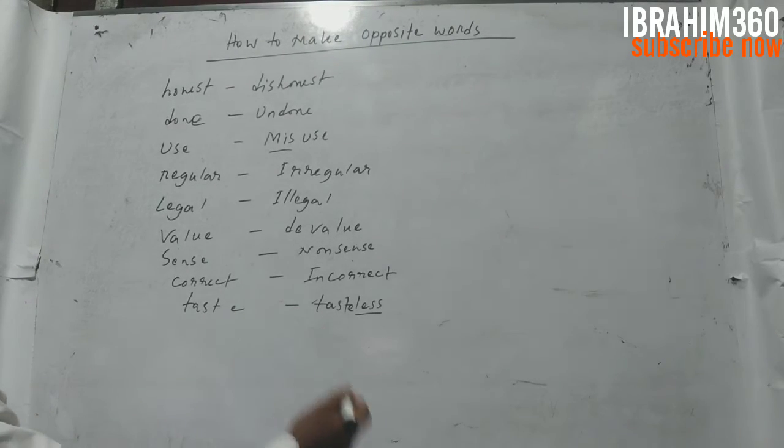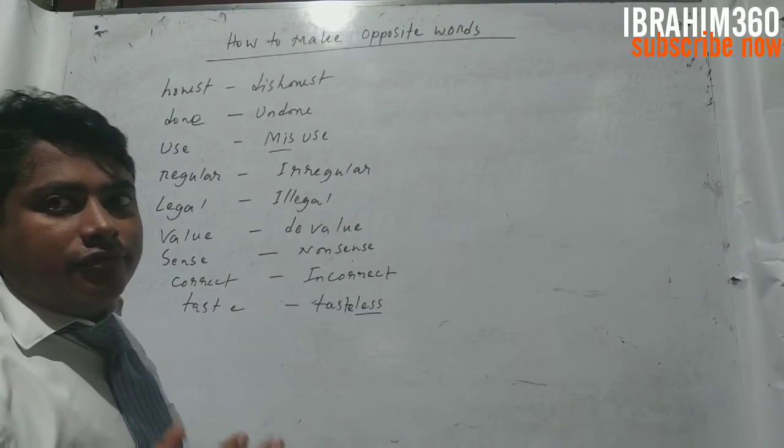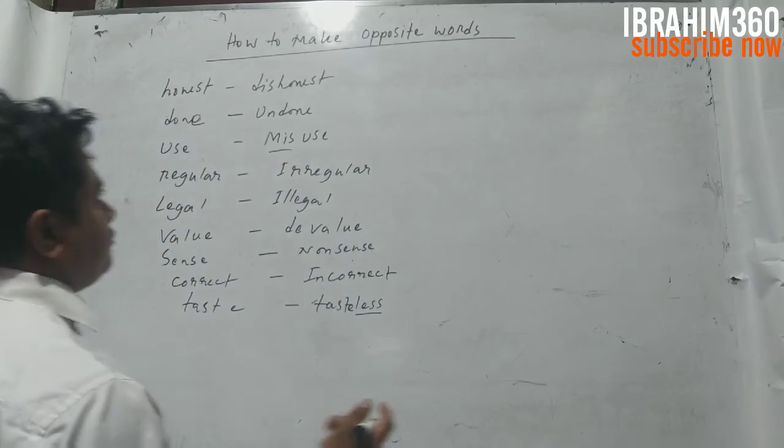Tahole amra easily English grammar-e synonym teke antonym korte paree with the help of prefix or suffix.